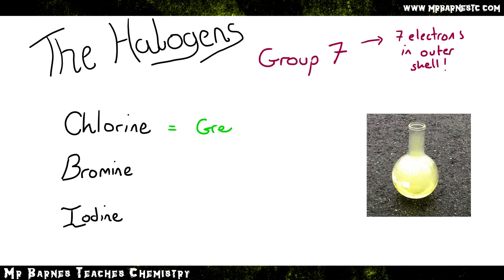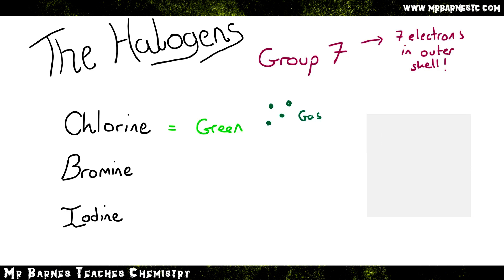Starting with chlorine, it is simply a green gas. If you look at the diagram on the right hand side, don't be fooled into writing yellow. It does look quite yellowy, and you used to get away with saying yellowy green, but what the examiners want is for you to say green gas.